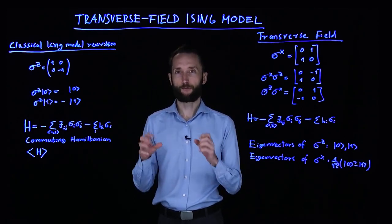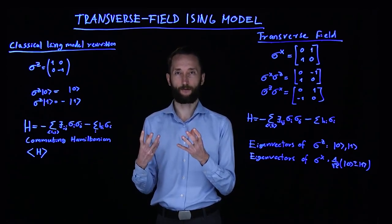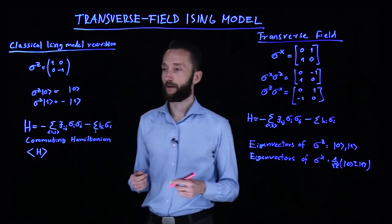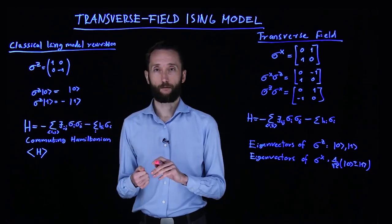To get there, first we write our classical Ising model in a more quantum mechanical form. What we introduced in the previous video was this Hamiltonian of binary variables.